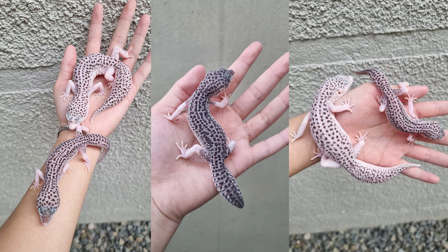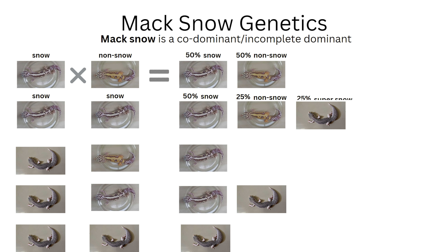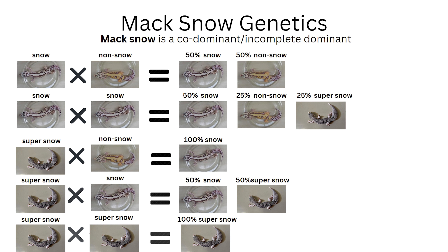But many super snows are very picky eaters, and some of them grow slower because of this. They have a little bit of a deformed head structure, but that's what makes them look cuter than others. Let's go back to the genetics of snows.